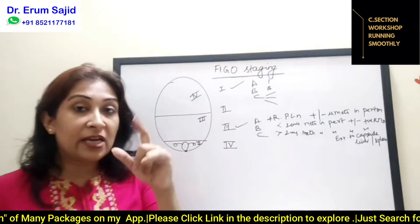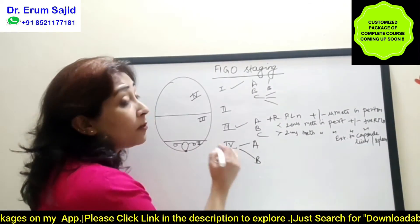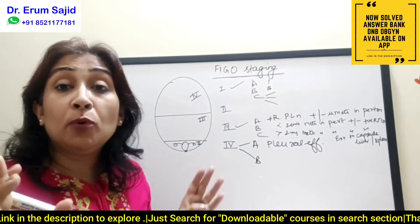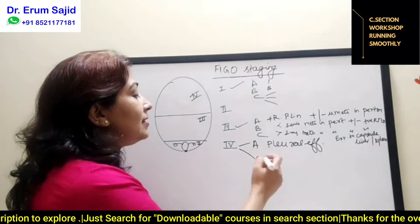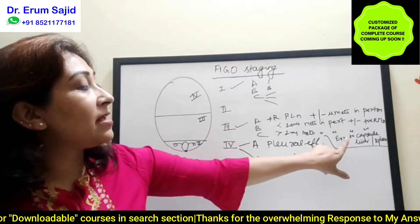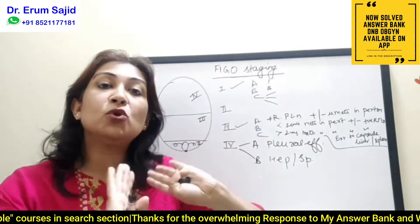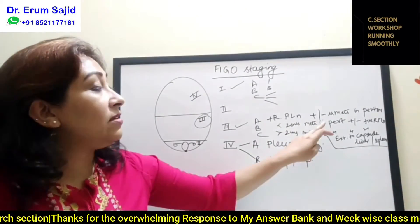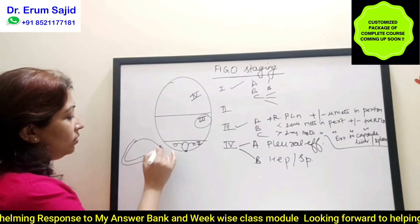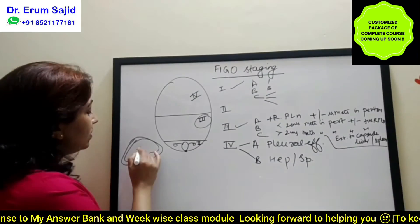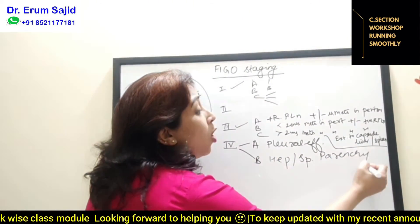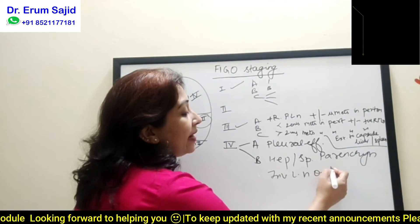Stage four A is pleural effusion positive for malignant cells — it goes to the lung cavity. Stage four B is hepatic or splenic parenchyma involvement. Important distinction: capsule of liver and spleen involved is still stage three B or C, but if it goes into the parenchyma, that is stage four B, with worse prognosis.